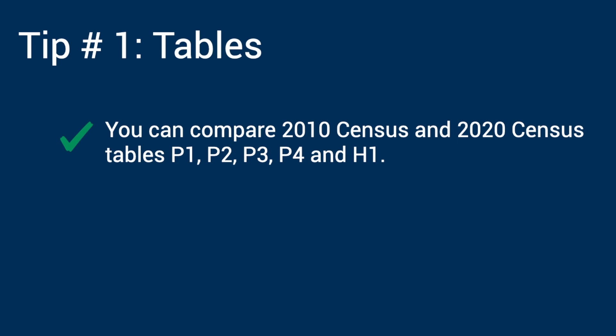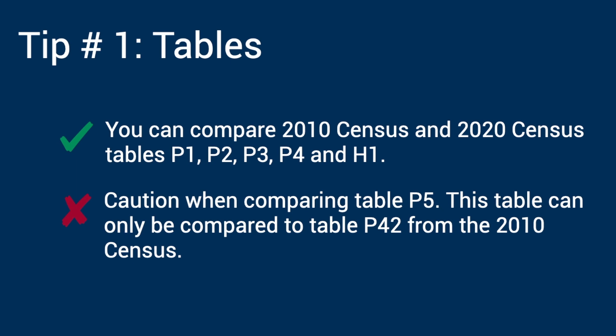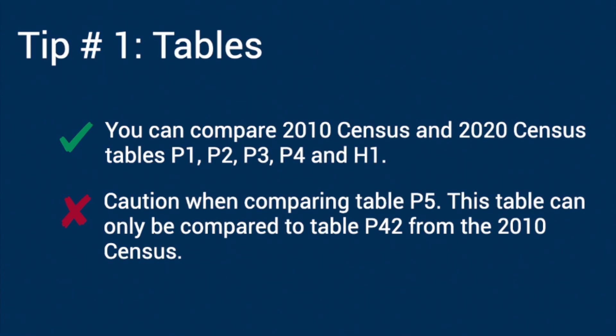However, as part of the 2020 Census redistricting data products, the Census Bureau released for the first time table P5 for group quarters population. In 2010, group quarters population by group quarters type was not released as part of the redistricting products — it was released with the main release of 2010 Census data as table P42. Therefore, you can compare table P5 from 2020 with table P42 from the 2010 Census.